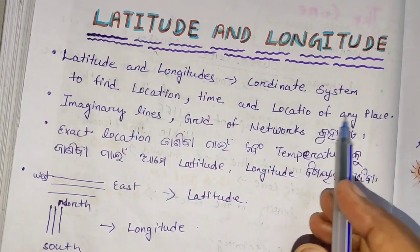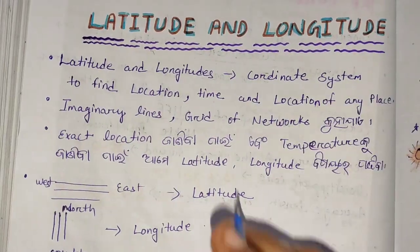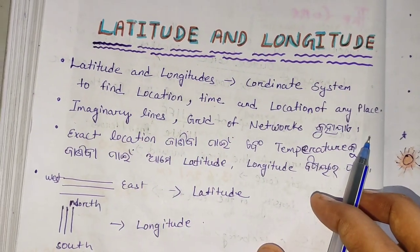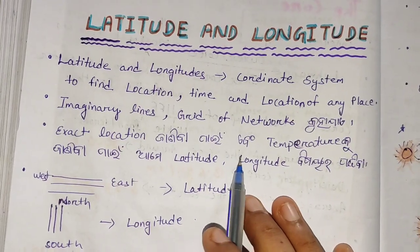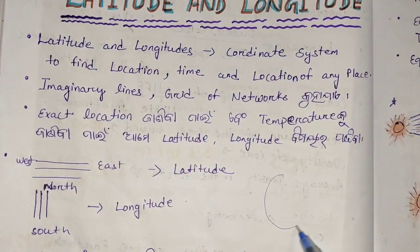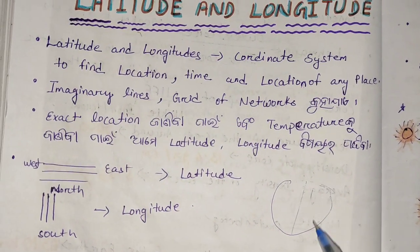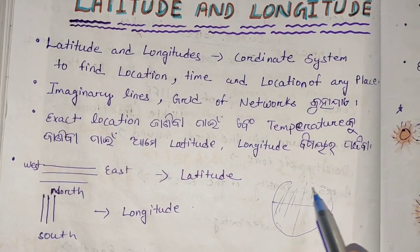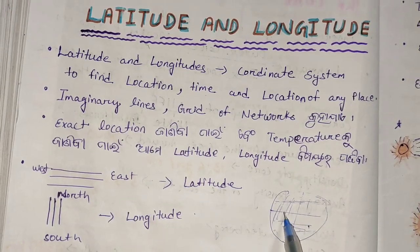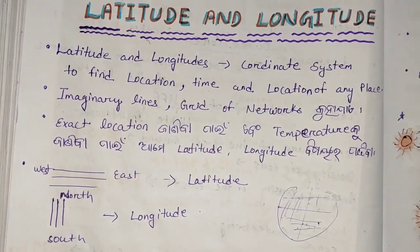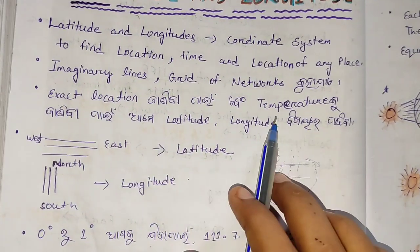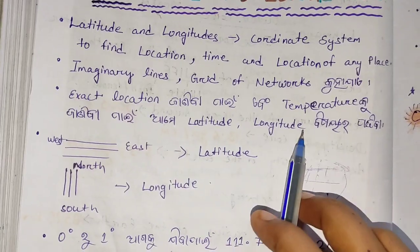Then we have to find imaginary lines — a grid of networks — because we are scientists researching time and location. We have to find a type of latitude and longitude. So we can find those imaginary lines, the grid of networks, to find the exact location and temperature using latitude and longitude.